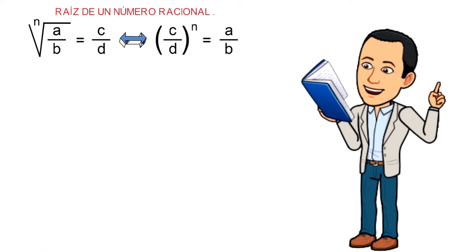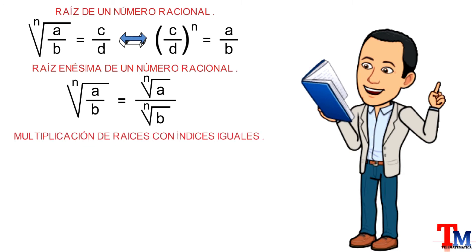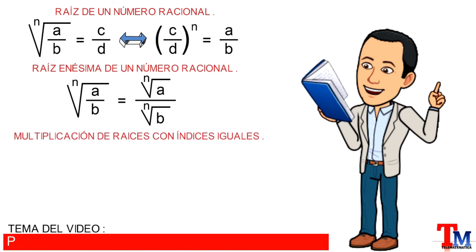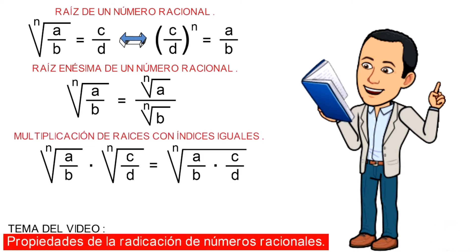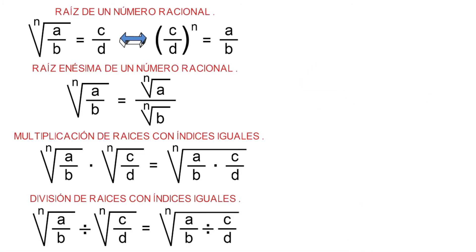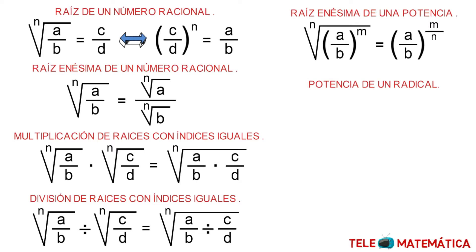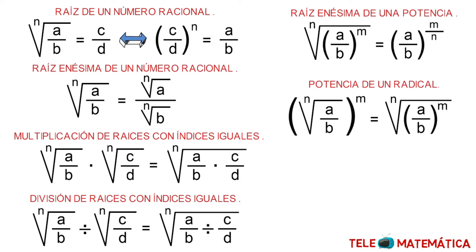In first place, the root of a rational number. In second place, the multiplication of roots with equal indices. In third place, the root of roots with equal indices. In fourth place, the root of a rational number. In fifth place, the root of a rational number. And in sixth place, the root of a rational number.